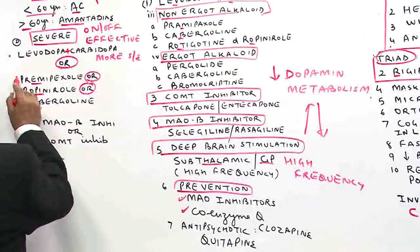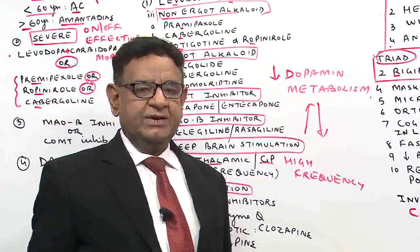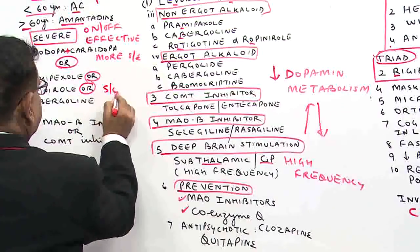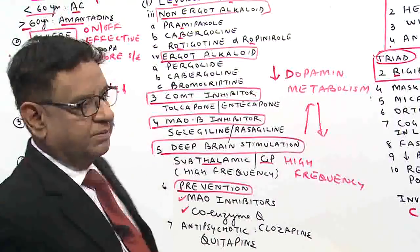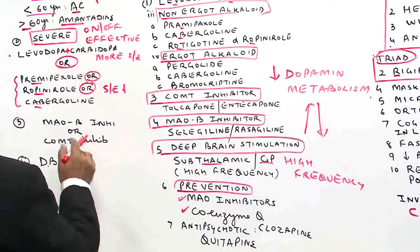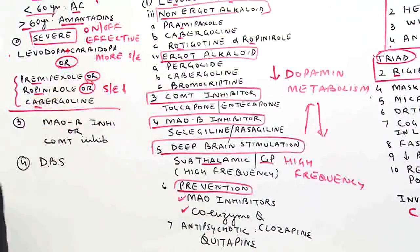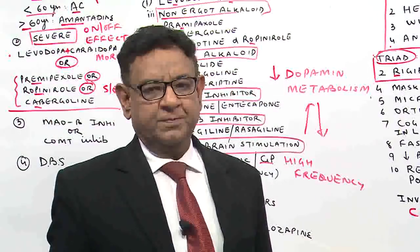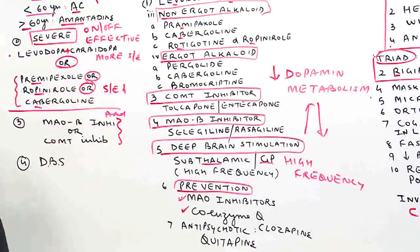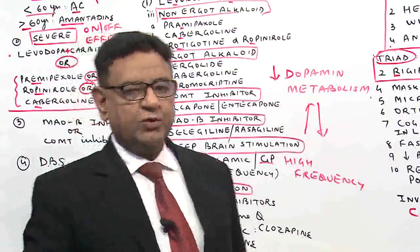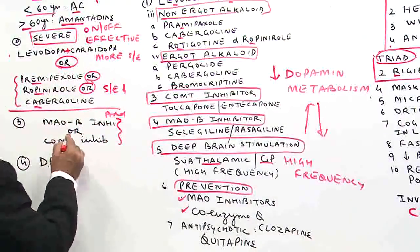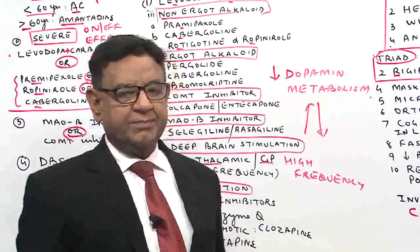The second combination — pramipexole, ropinirole, or cabergoline — is more widely used. Why? Because side effects are much less compared to levodopa. So they are the most widely used drugs in severe disease. If the patient still does not improve, then we can add either a MAO-B inhibitor or a COMT inhibitor to prolong the action of dopamine. Remember, only one of these should be given — they should not be combined, as both have the same mechanism.